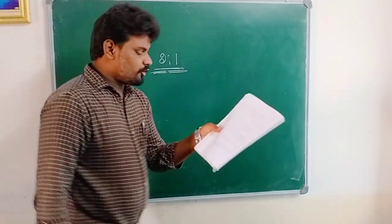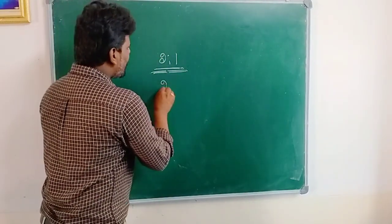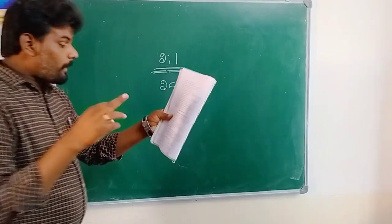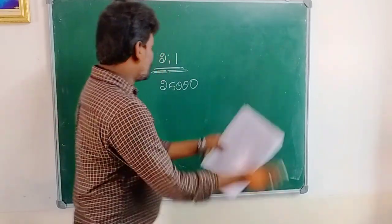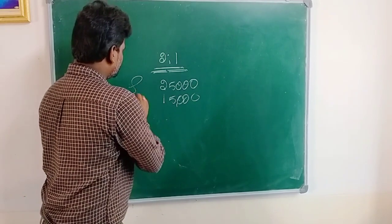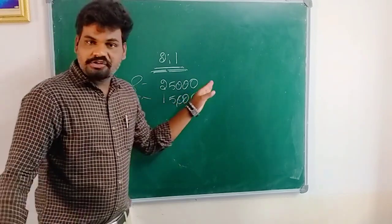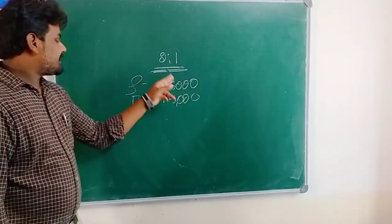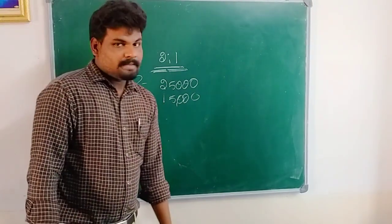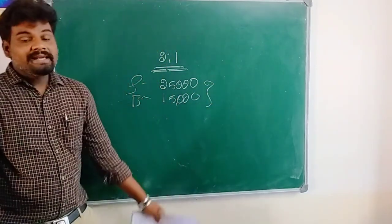With capitals of rupees 25,000 and 15,000 respectively. So here one partner, Shiva, is investing rupees 25,000 to the business, and the same being Basava, he is investing rupees 15,000 to the business organization. This is the contribution of capital by each partner.